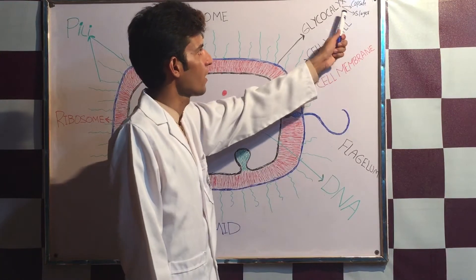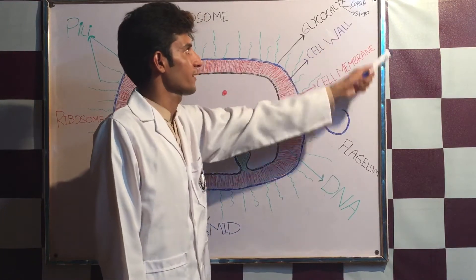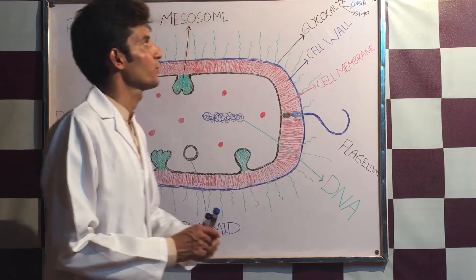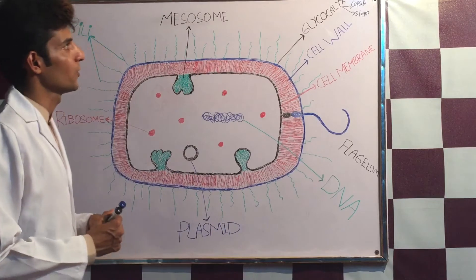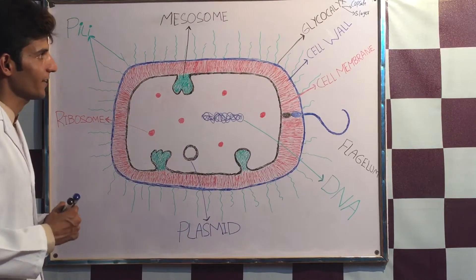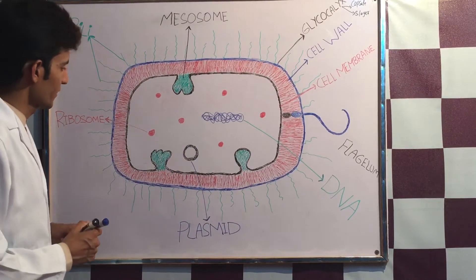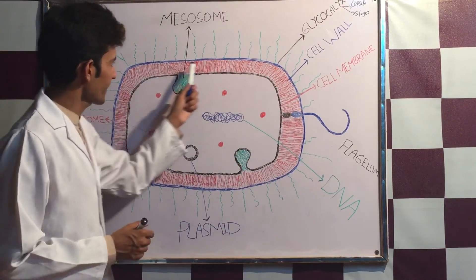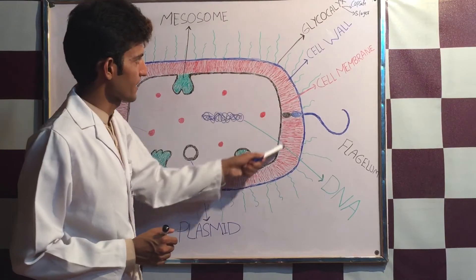If it is a thin, loose, and not well-organized structure, we call it a slime layer or S-layer, and it is composed of only polysaccharide.